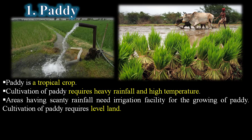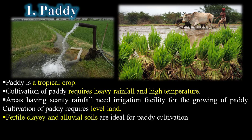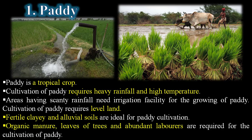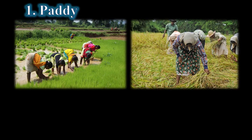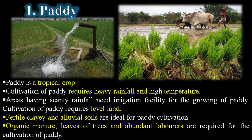Areas having scanty rainfall need irrigation facility for growing paddy. Cultivation of paddy requires the land to be level as well as fertile. Clay and alluvial soils are ideal for paddy cultivation. Organic manure, leaves of trees, and abundant laborers are required for the cultivation of paddy.